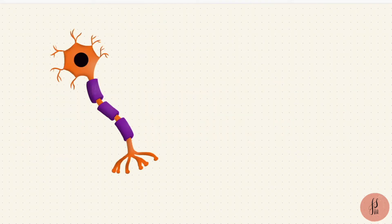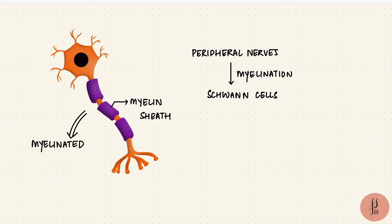The axon may or may not be surrounded by a myelin sheath. If we're talking about a peripheral nerve, that process of myelination is done by Schwann cells. And if there is myelin, then it's called a myelinated nerve.